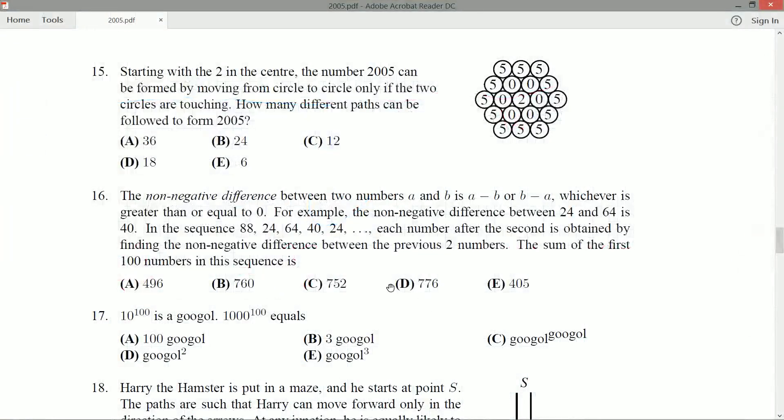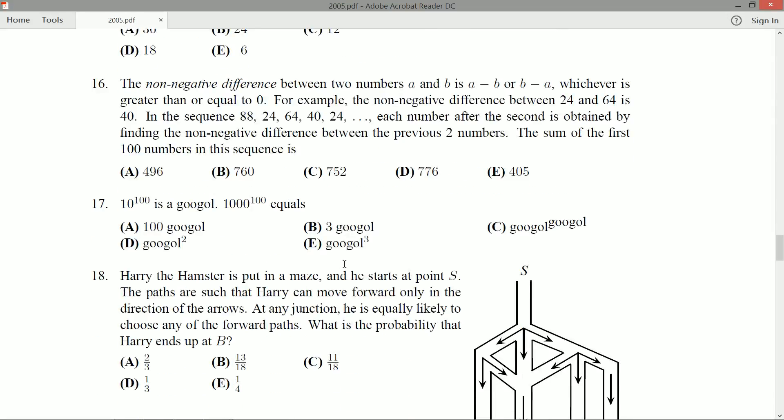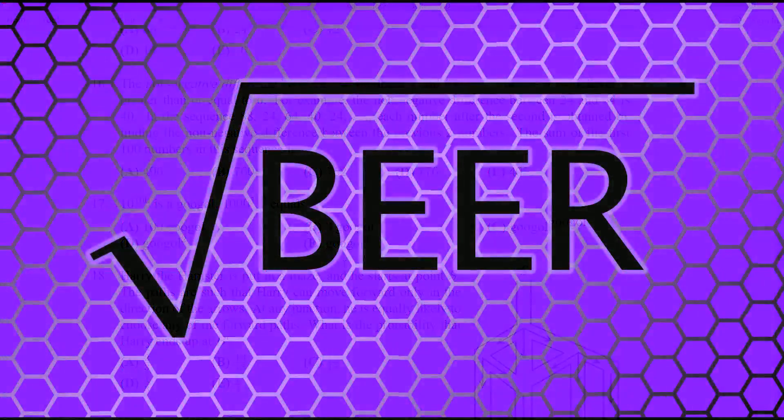Now if we take a look at some of the other answers, we get D if we added on an additional 16, we'd get C if we forgot that little 8 at the end. Some very interesting ways to get some of the other numbers. Not quite sure how you would mess it up and get 405 or 460 or 496, but it's always interesting to stop and consider how could I get the other answers. Puts you in the mindset of a contest maker. Anyway, we got question 17 on deck, so we'll take care of that in the next video. Thanks for watching.